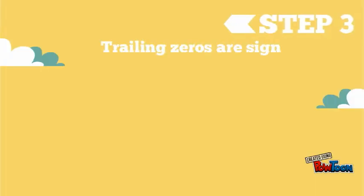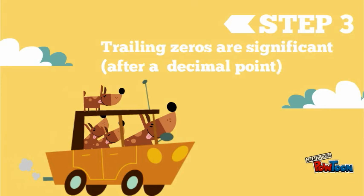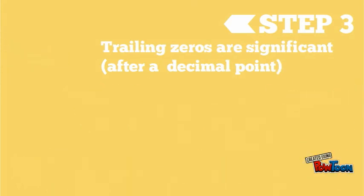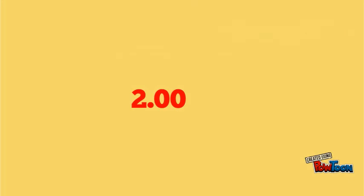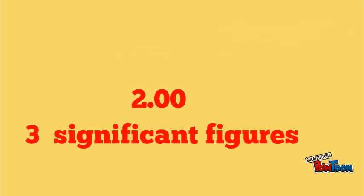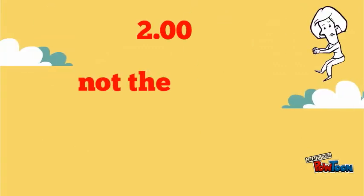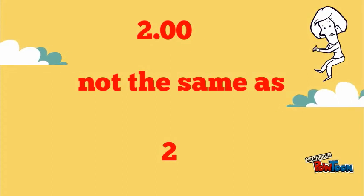The next rule is that trailing zeros after a decimal point are significant. So in the example 2.00, those two zeros at the end actually count, giving us three significant figures. A measurement of 2.00 is very different from a measurement of 2 — the one that's 2.00 is going to be more precise.